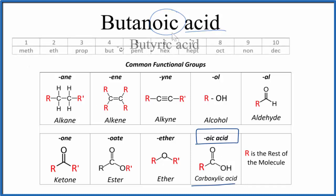For the but, the prefix but, that means four. So we're gonna have four carbon atoms, and on the end, we'll have our double bonded carbon to the oxygen, and then the OH group.